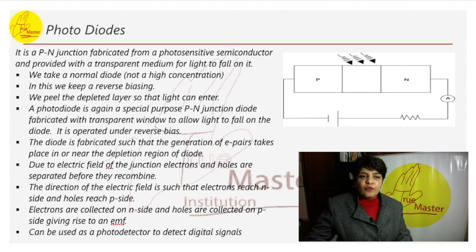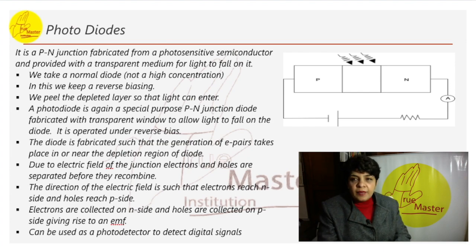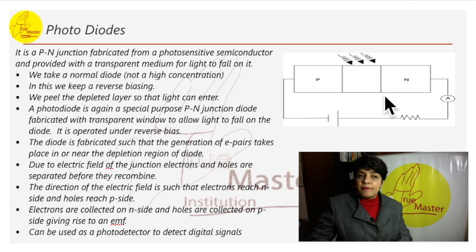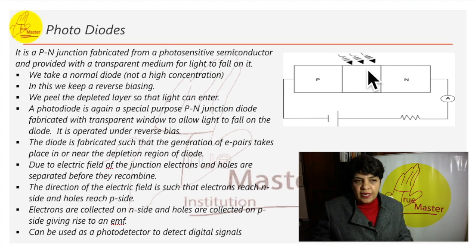Now starting with photodiodes. This is a P-N junction. Photodiode is a P-N junction fabricated from a photosensitive semiconductor and provided with a transparent medium for light to fall on it. There is a transparent material here which allows the light to fall onto it. The top of the P-N junction is toned.